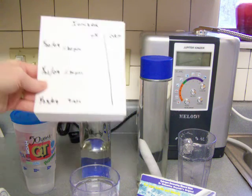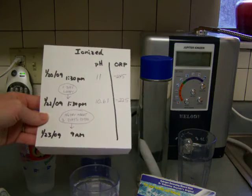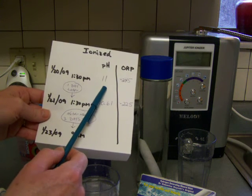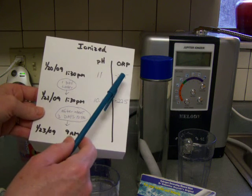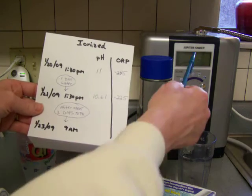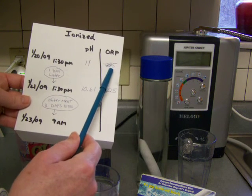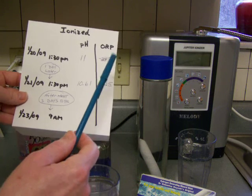Originally this water tested at a pH of 11 when I poured it fresh out of the ionizer, or fresh out of the tap, it goes through the ionizer. And it was an ORP of negative 245.